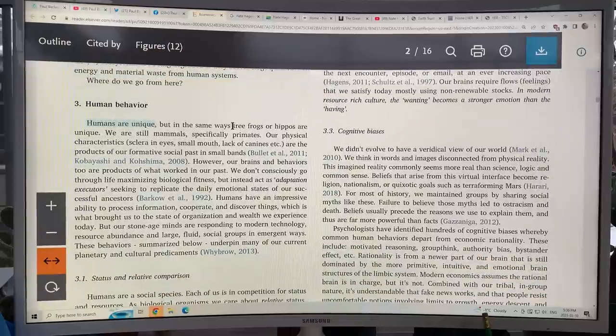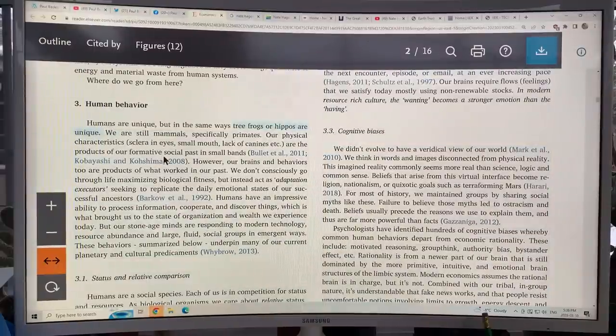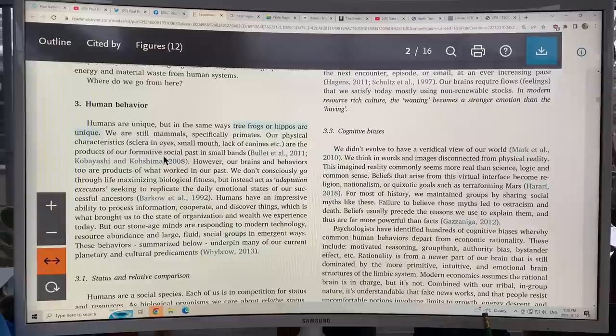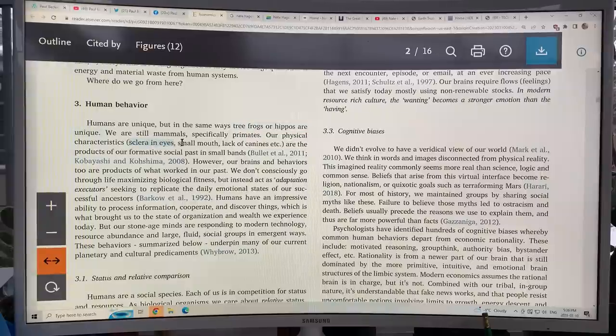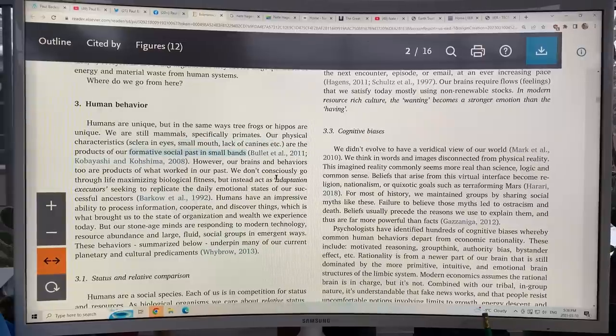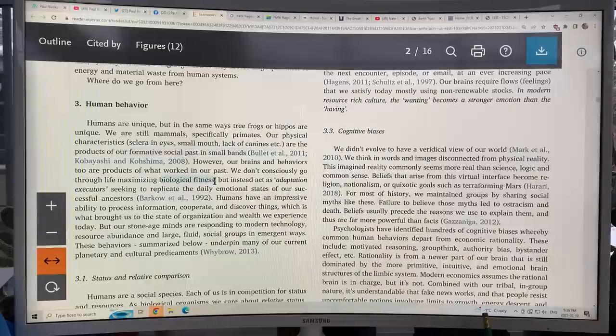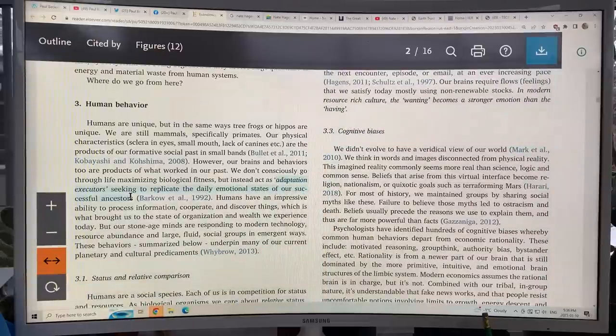Like humans are unique. We're unique just the same way that tree frogs and hippos are unique. So uniqueness applies to just about every species. We're still mammals, primates, but our physical characteristics like the sclera, the white part of the eyes, the small mouth, the lack of canines, these are the products of our formative social past in small bands. But our brains and behaviors are products of what worked in the past. We don't consciously go through life maximizing biological fitness, but instead we act as adaptation executors, seeking to replicate the daily emotional states of our successful ancestors.